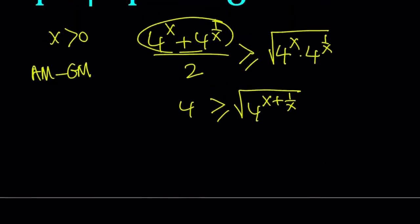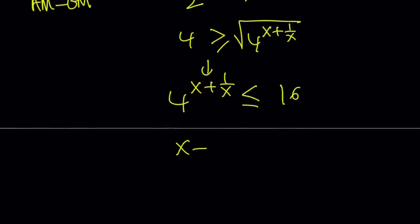First of all, notice that everything inside the radical is positive. We can square both sides. 4 is positive, so it's all good. If you square both sides and put the 4 to the power x plus 1 over x on the left-hand side, you get 4 to the power x plus 1 over x is less than or equal to 16. And this just indicates that x plus 1 over x is greater than or equal to 2.